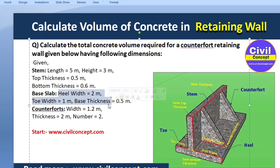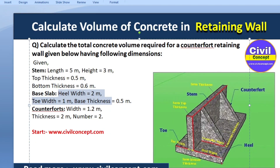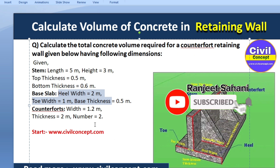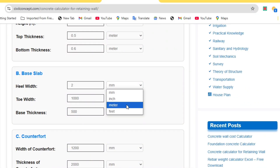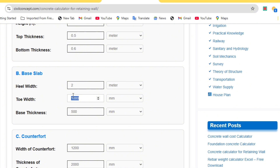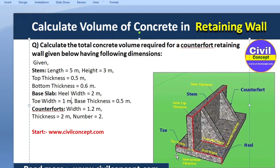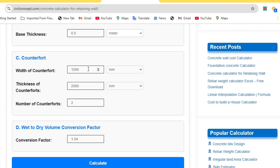Now we have to put in the dimensions of the base slab. Heel width means the distance from the corner to the stem length — that is the heel width — which is 2 meters. Toe width is from this corner up to the stem, which is 1 meter. You can also input dimensions in mm or feet. Base thickness is 0.5 meters, so I am putting in 0.5 meters.